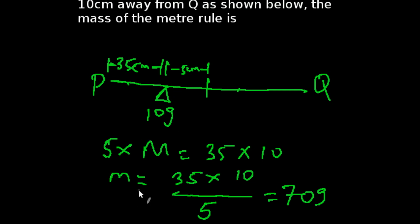So that is going to give us mass equals 35 times 10 all over 5. That would be 70 grams. So the mass of our meter rule is 70 grams.